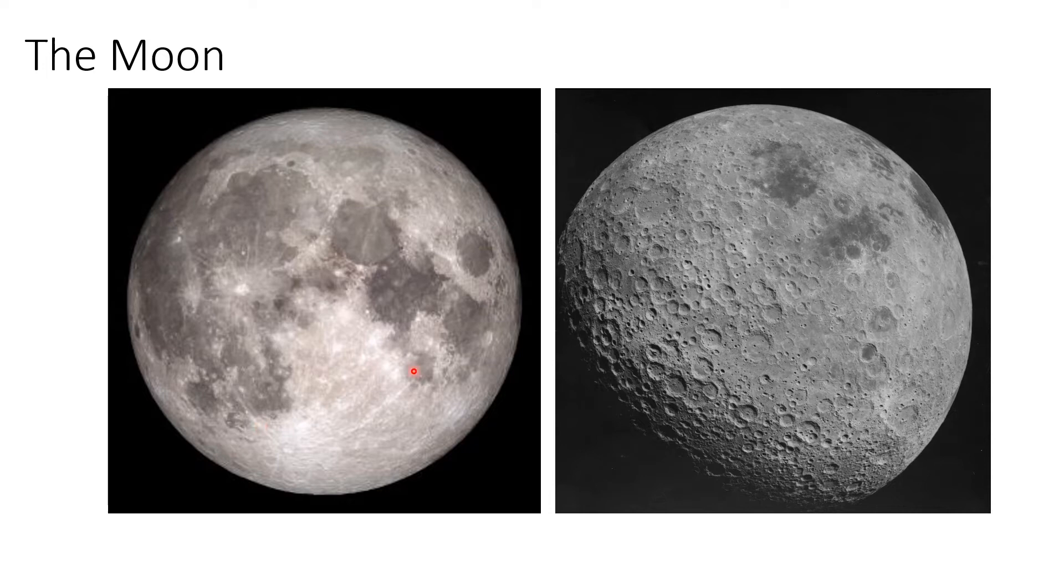A rock comes down, and then a whole bunch of material is splashed up and then it falls back onto the surface. We can use stuff like this to see which features are older. So this Maria is older than this crater. This crater is newer because the rock came in, smashed, and then splashed all this dirt on the already formed lava flow that was there.